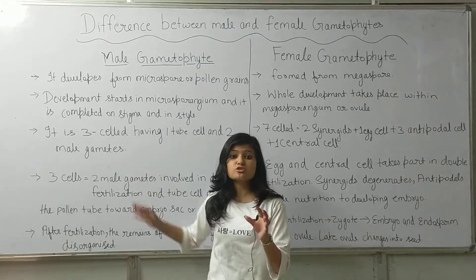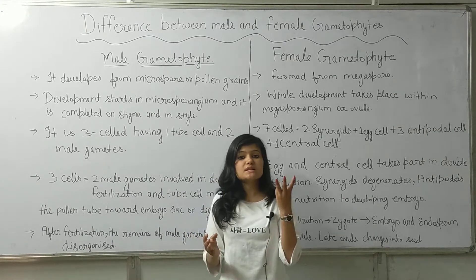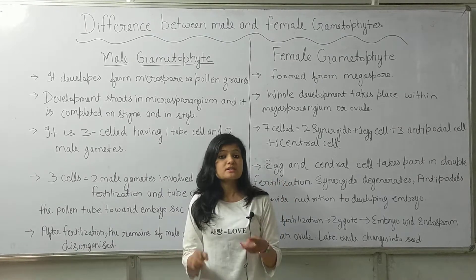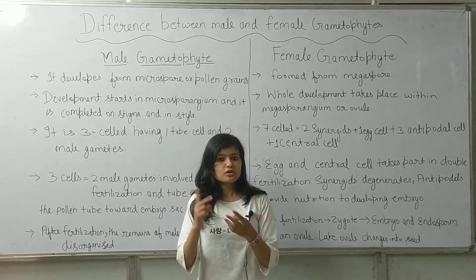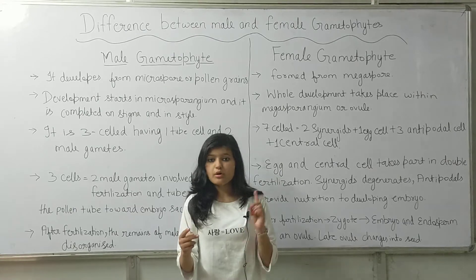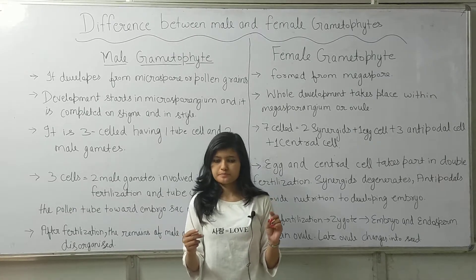The male gametophyte is made of three cells: two male gametes and one tube cell.